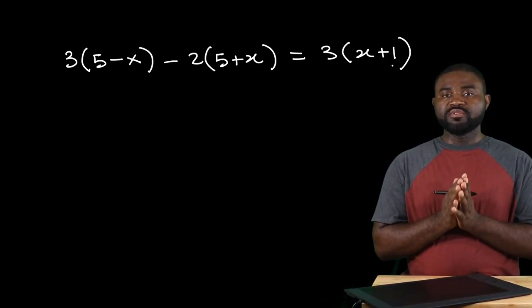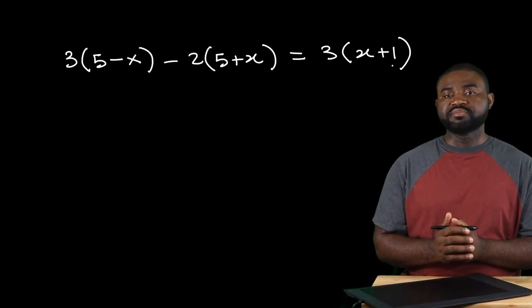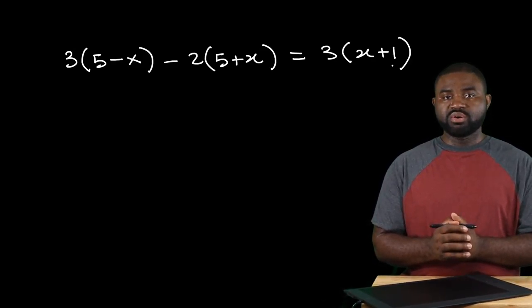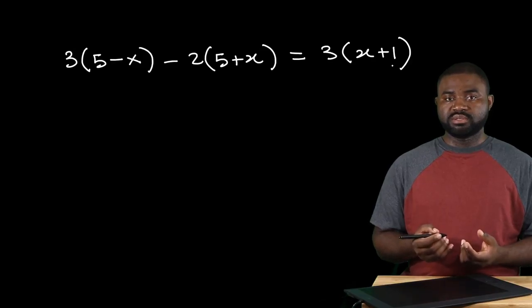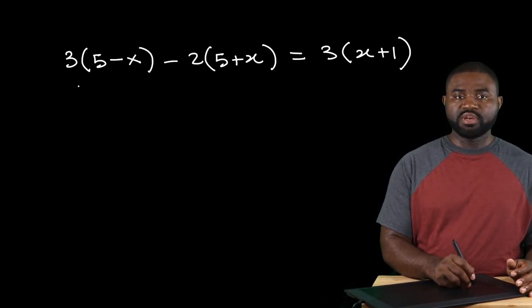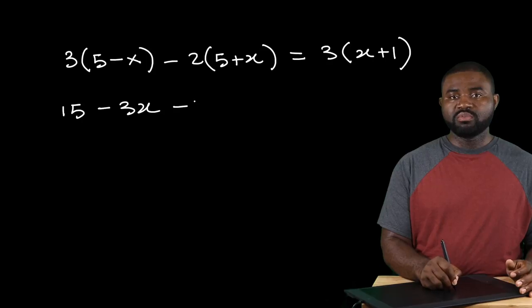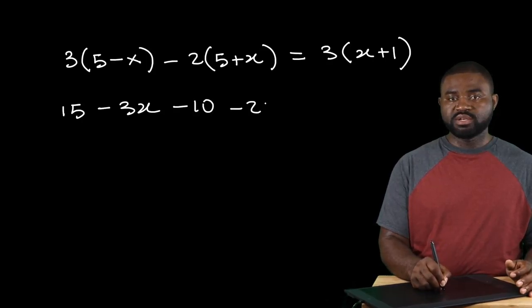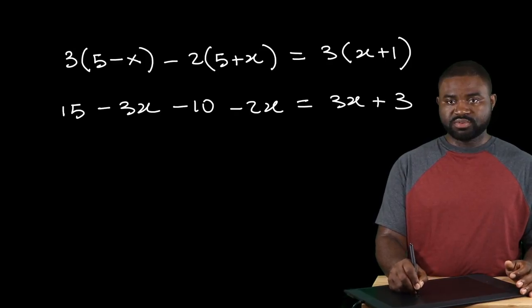So how do we look for x in this case? This is a little bit complicated. My recommended steps for you will be that you first of all expand or remove the brackets. So we will have 15 minus 3x minus 10 minus 2x equal to 3x plus 3.